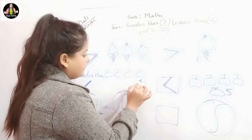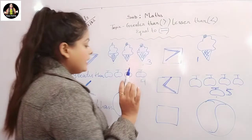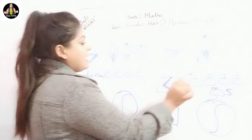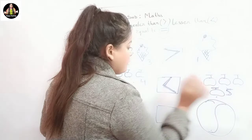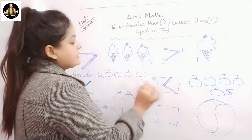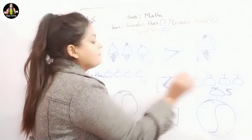One, two, three, four apples are here. It means four is less than five.